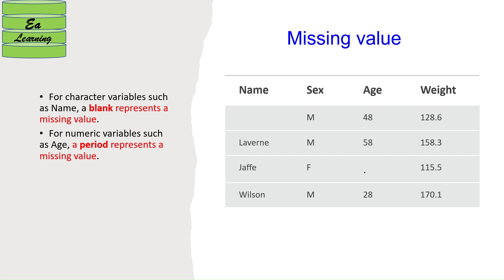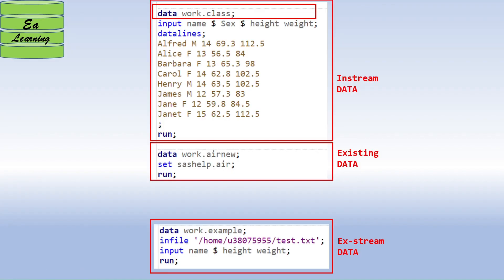Missing values in SAS are represented differently depending on variable type. If a character variable is missing, it is represented by a blank. If a numeric variable is missing, it is represented by a dot (period). For example, a missing 'name' appears as blank, and a missing 'age' appears as a dot.